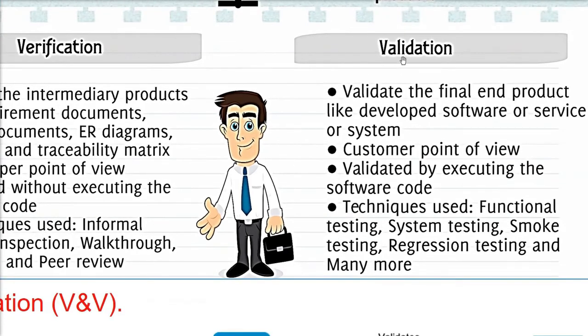In validation, this is the final end product, like the developed software or service or system. We need to validate it because it is from the customer point of view, whether his requirement has been fulfilled or not. So this is validated by executing the software code. The functional testing, system testing, smoke testing, regression testing and many more.